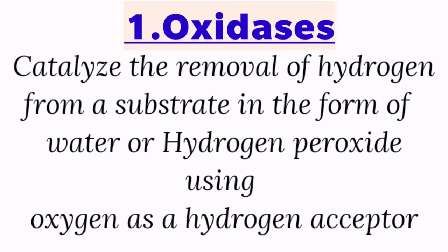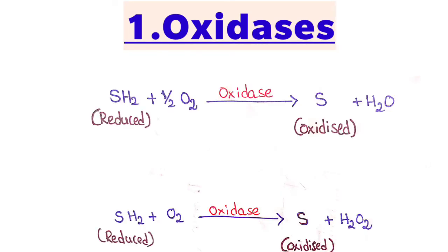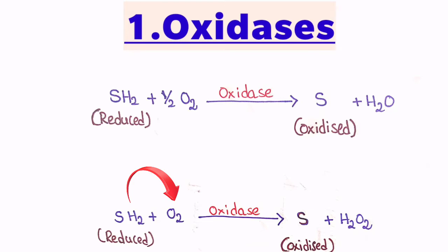To understand it easily, let us consider the general reactions catalyzed by oxidases. In the first reaction, the oxidase removes hydrogens from the reduced substrate SH₂, and those are accepted by half of the molecular oxygen, so that oxygen is converted into water. In the second reaction, the oxidase again removes hydrogens from SH₂ and transfers them to molecular oxygen, which is converted into hydrogen peroxide.